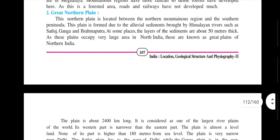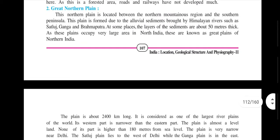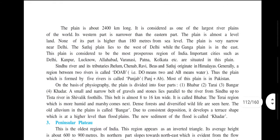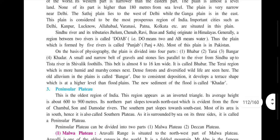The Great Northern Plains are formed by alluvial sediment deposited by rivers such as the Sutlej, Ganga, and Brahmaputra, with sediment depth reaching up to 50 meters in some areas. This plain stretches about 2400 km and is the largest river plain in the world. Its western part is narrower than the eastern part, and no part of it is higher than 180 meters above sea level.